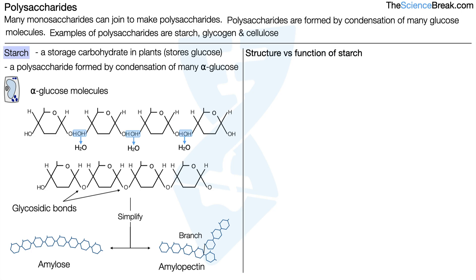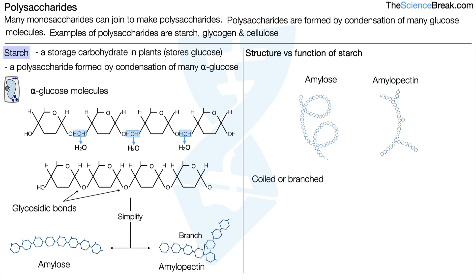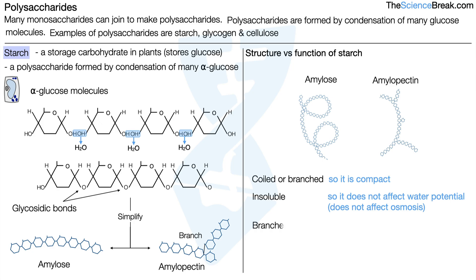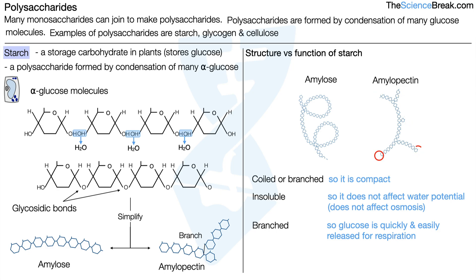Looking at the structure versus function of starch: starch is coiled or branched, meaning it's compact so you can store quite a lot of it in a small amount of space. Starch is insoluble, which means it does not affect the water potential of a cell — in other words it does not affect osmosis, and won't cause water to move into or out of the cell. The branched version means that glucose is quickly and easily released for respiration; looking at amylopectin you can see there are lots of ends where glucose can be released. Finally, it's a large molecule, which means once stored in a cell it cannot pass the cell membrane, so it cannot leave the cell.